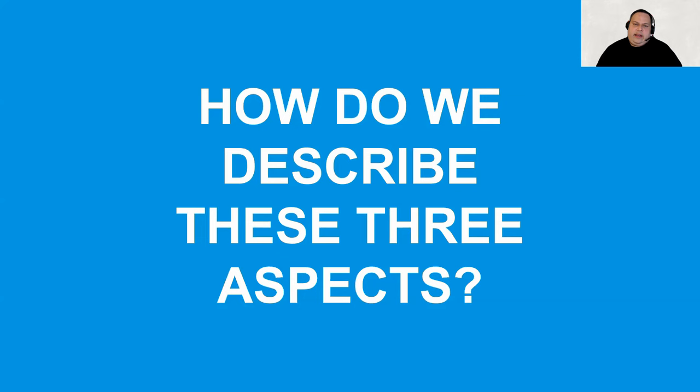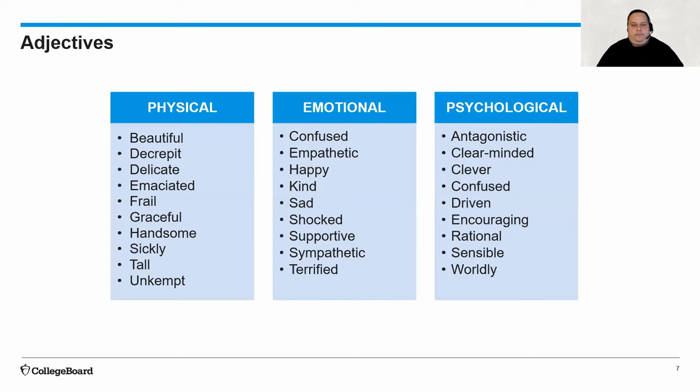If we understand the three aspects of characterization, what we have to talk about next is how do we describe these aspects. Here are some adjectives — and that's the key phrase: adjectives. We want to build our adjective capacity, because the more words we know to attribute to characterization, the more we're going to reach the closer we're going to get to our goal, which is precision.